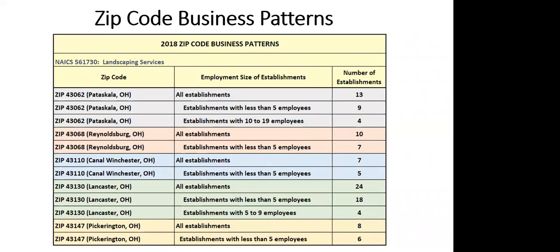You can also go down to the zip code level with County Business Patterns. For example, I can see there are 13 landscaping businesses in zip code 43062, which is Pataskala — a lot of small ones with fewer than 5 employees, and some with 10 to 19 employees. You can delve down to the zip code level to see what's already there if you're thinking of opening or expanding a business.